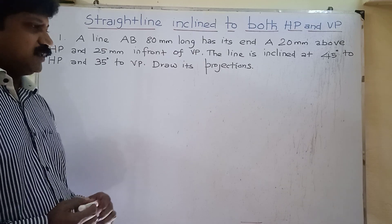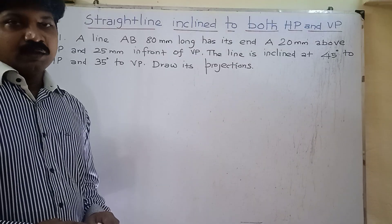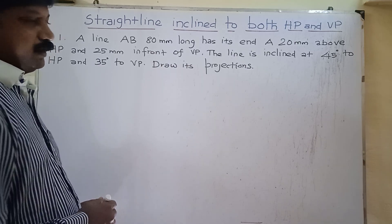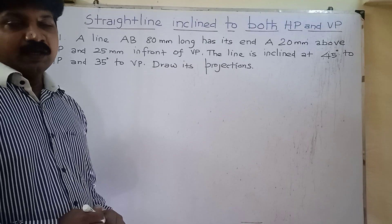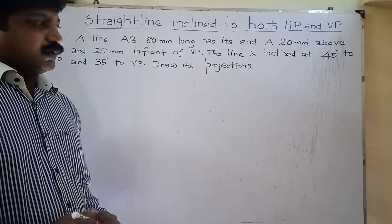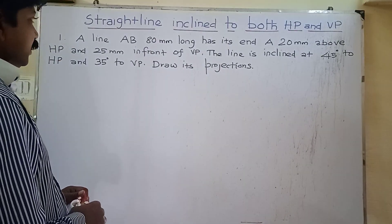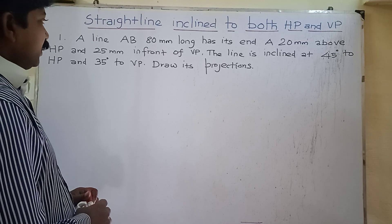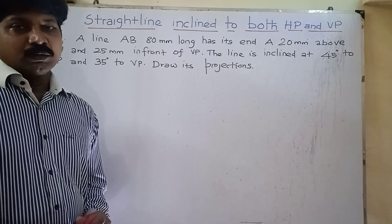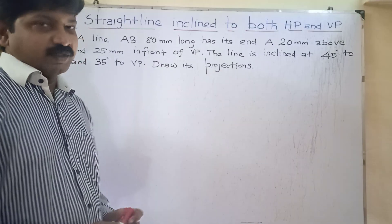First step of this diagram: assume the straight line inclined to HP only, that is inclined to HP and parallel to VP. Draw the projections first. A straight line AB, 80mm long, inclined at 45 degrees to HP. Assume the straight line inclined to 45 degrees to HP only. Draw the front and top view first.